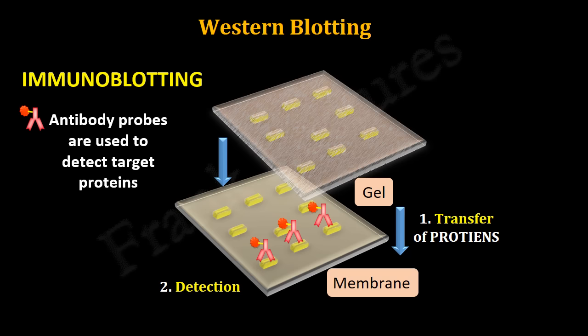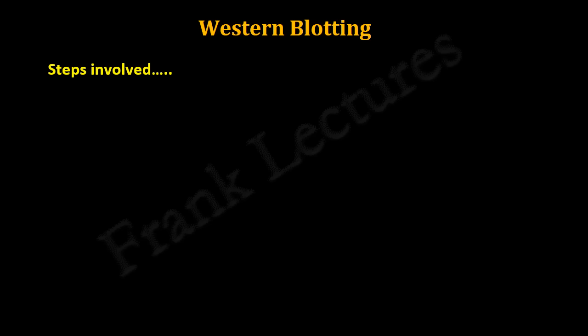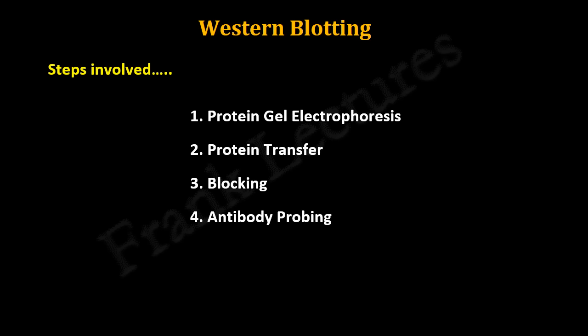There are five main steps involved in Western blotting. These are protein gel electrophoresis, protein transfer, blocking, antibody probing, and detection. Let's understand each of these steps in detail.